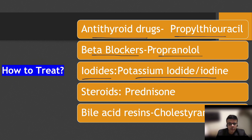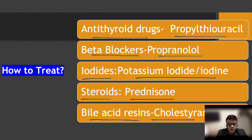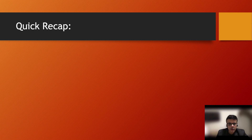Steroids can be used in severe or persisting inflammatory conditions associated with Graves' disease — prednisone is particularly effective. Bile acid resins such as cholestyramine can also potentially interrupt the enterohepatic recycling of thyroid hormone and disrupt thyroid hormone synthesis.